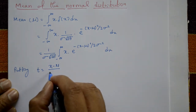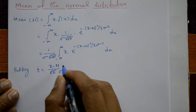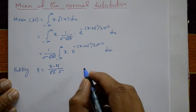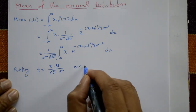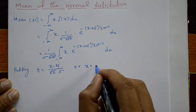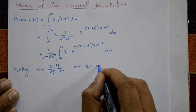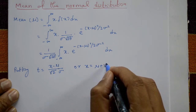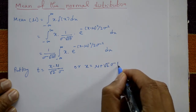Now put the substitution: t equals (x minus mu) divided by square root 2 times sigma. Solving for x, we get x equals mu plus square root 2 times sigma times t.